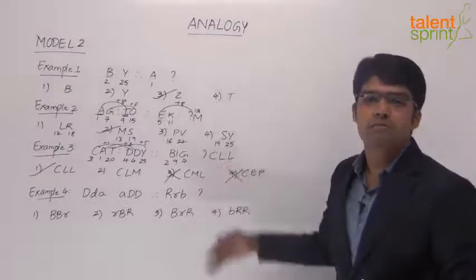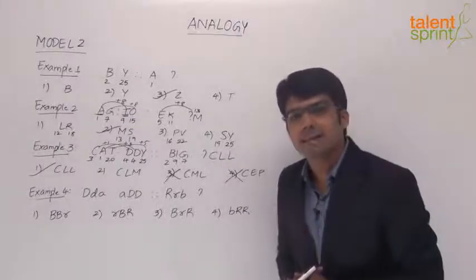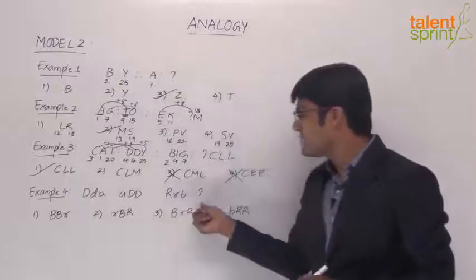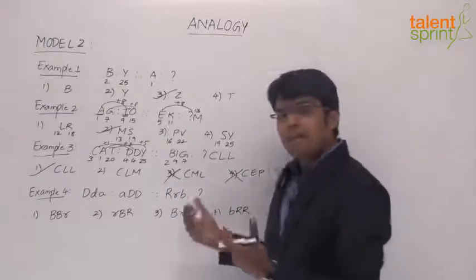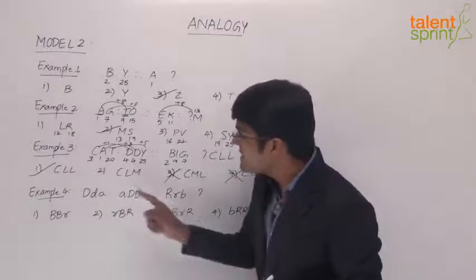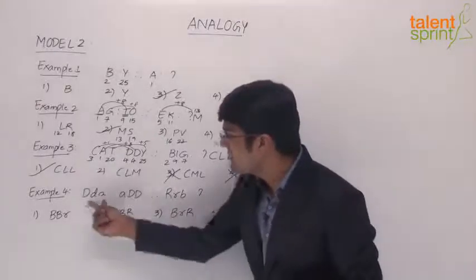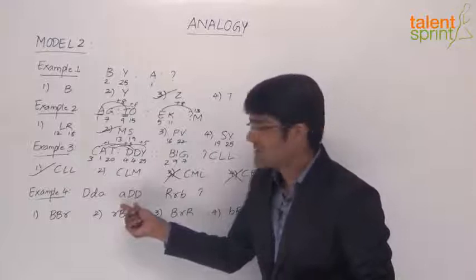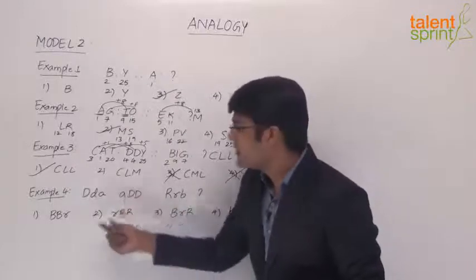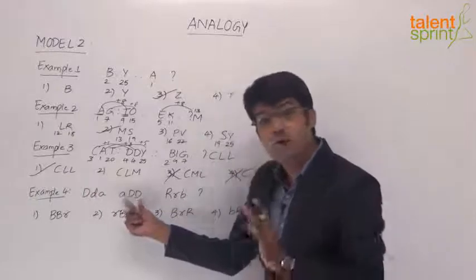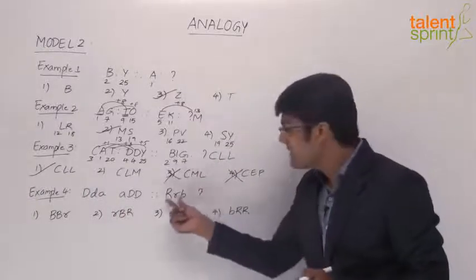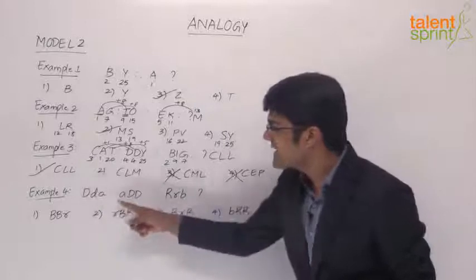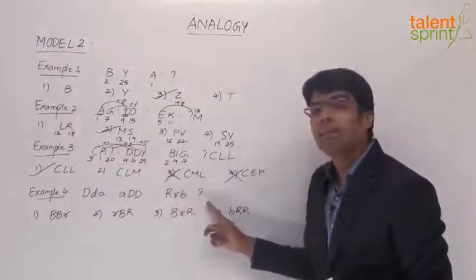This is how we just need to work on the positions to get the right answer. Let us now look at the last example, Example 4. The question says DDA is to ADD — so RRB is to what? One observation we can make is that the letters in both sets are the same: DDA and ADD have the same letters but they have been reversed. So DDA when reversed becomes ADD, meaning for the second set, RRB should also have the same letters in reverse order, giving BRR.